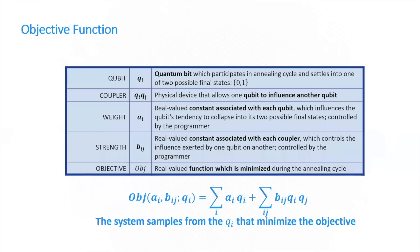I just wanted to lay out a couple of vocabulary words here. The objective function, sometimes referred to as a QUBO — quadratic unconstrained binary optimization — has a very simple form. B for binary means the Q variables can take 0, 1 values. O for optimization means we're trying to find the minimum of this function, though you could find maxima as well by multiplying the whole thing by minus 1. The AIs can be referred to as weights: if a weight is positive, the qubit wants to turn off; if a weight is negative, the qubit wants to turn on.